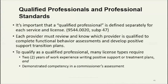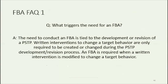The definition of qualified professional in the rule is actually the longest definition within the rule — about two pages long. A qualified professional is defined separately for each service and license, so each provider must review and know which person is qualified to complete the FBA and develop positive support transition plans for their service. For some services, that responsibility can go to case managers. To qualify as a qualified professional in many license types, there's also a requirement that a person have received two years of work experience writing positive support or treatment plans and demonstrating competency in a DHS commissioner's assessment. The need to conduct an FBA is tied to the development or revision of a positive support transition plan (PSTP).